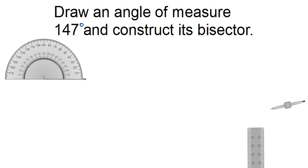This question is asking us to draw an angle of measure 147 degrees and construct its bisector. What is a bisector? It is a line that divides an angle into two equal parts.